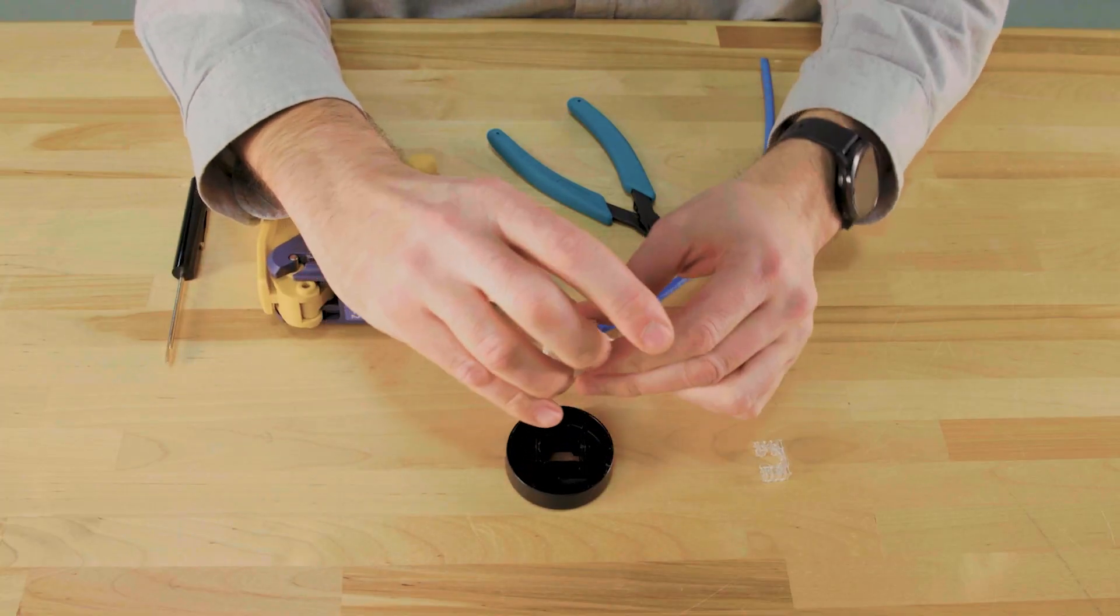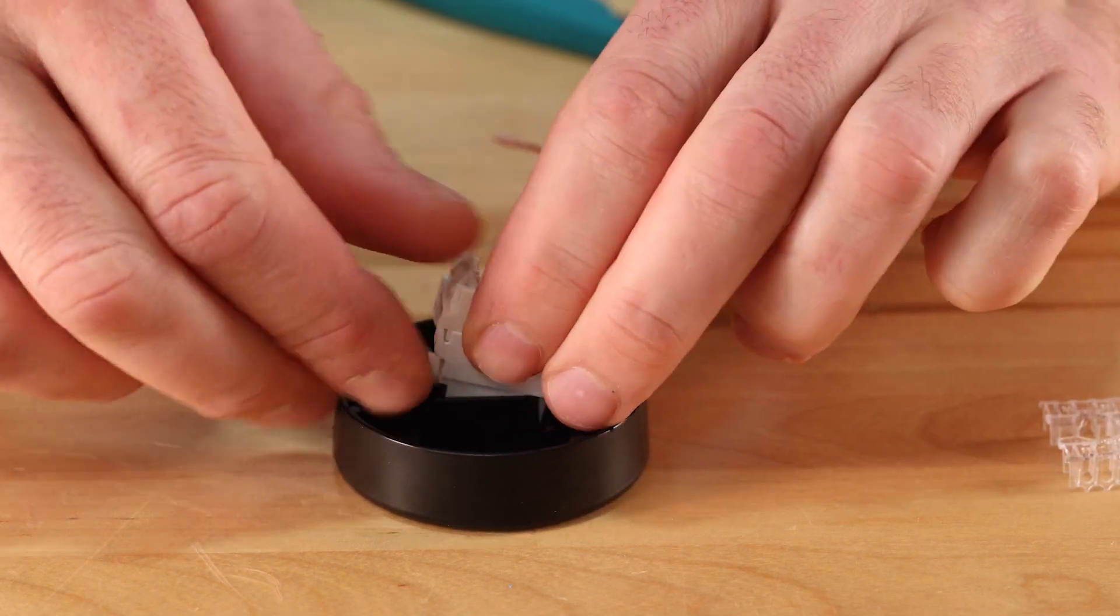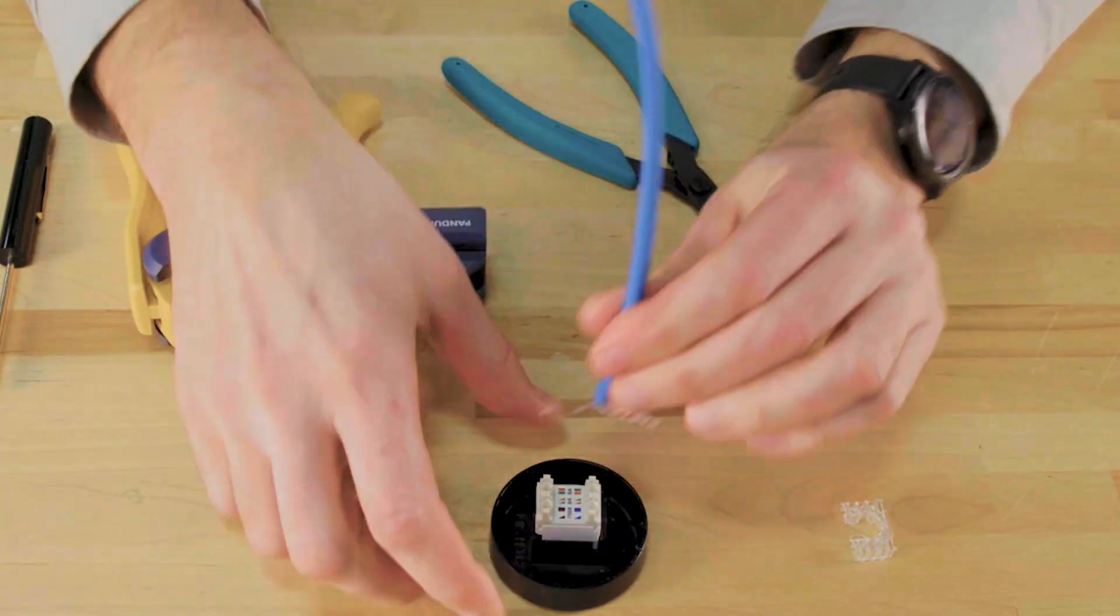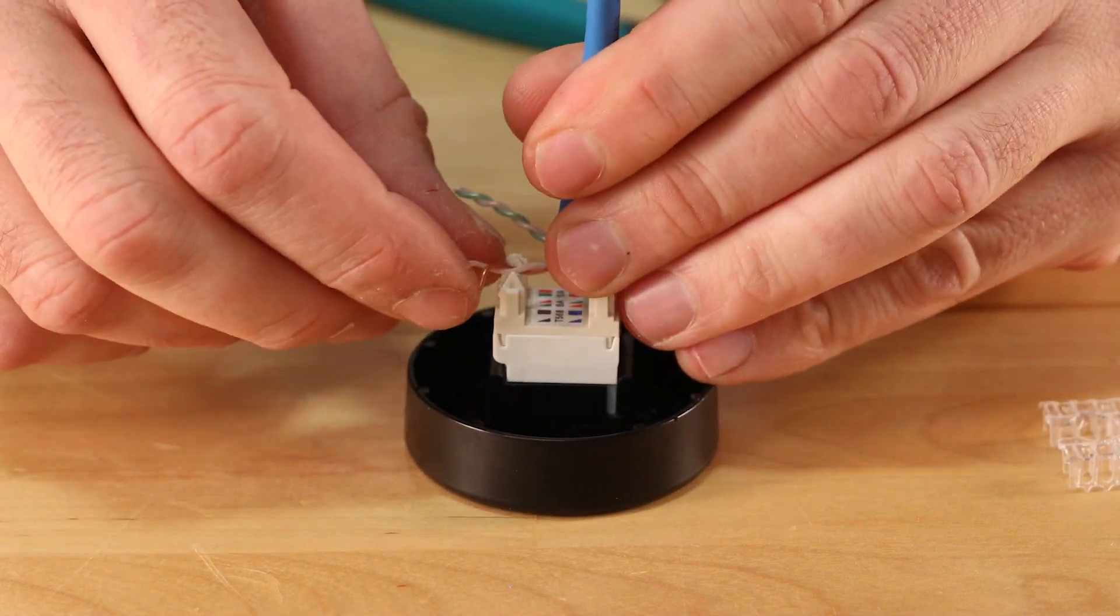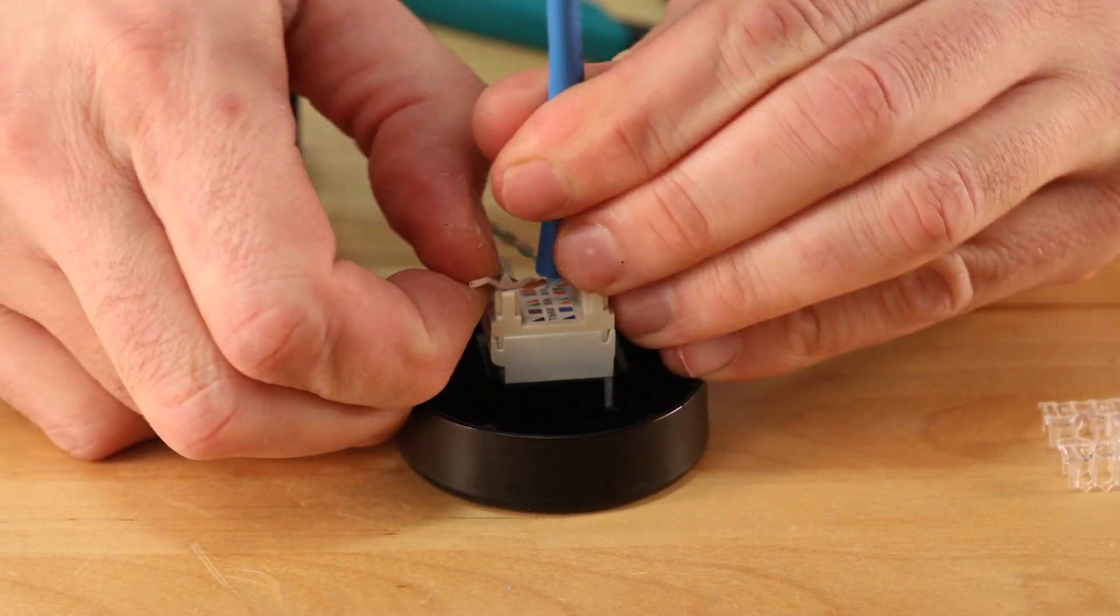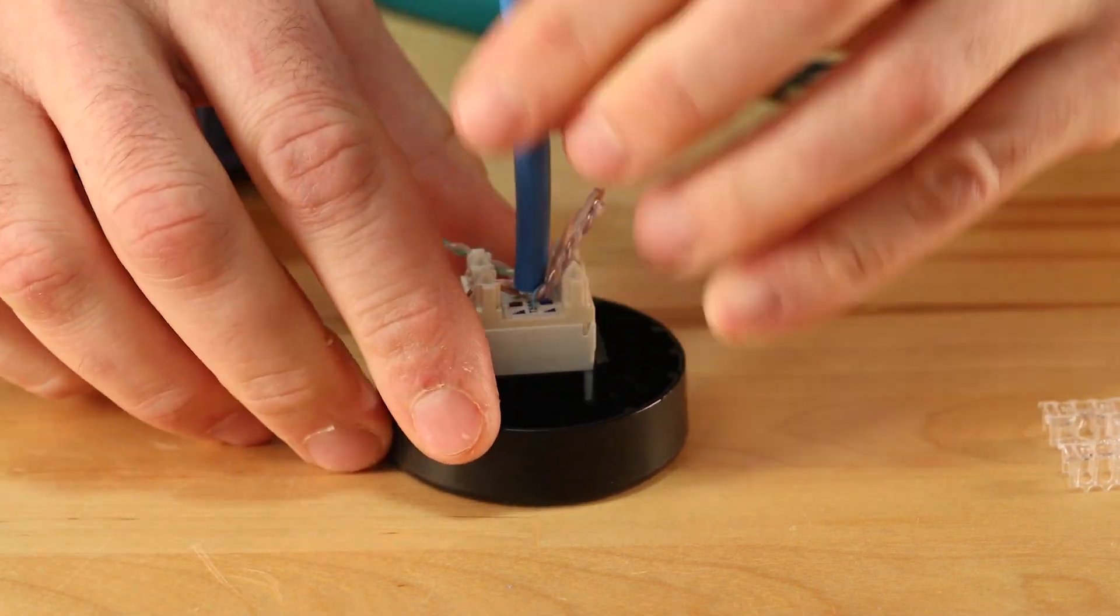Insert the jack into the termination base. The latch side is labeled. To terminate the jack, arrange the wires, keeping the maximum amount of twist that you can. Start off with a brown pair, trying to keep the cable as centered as you can on the back of the jack.